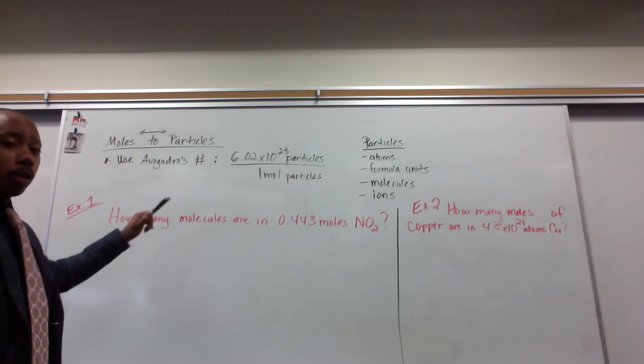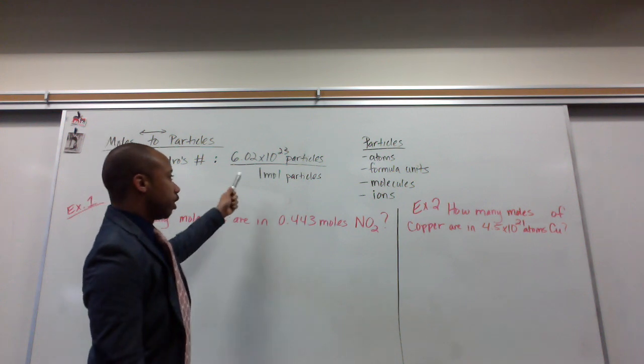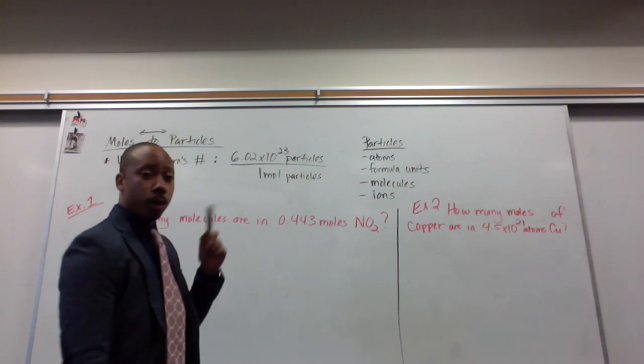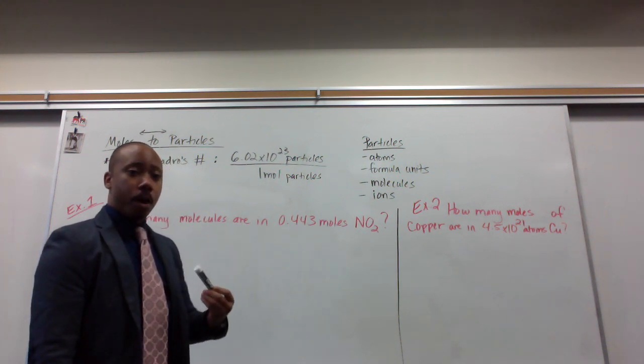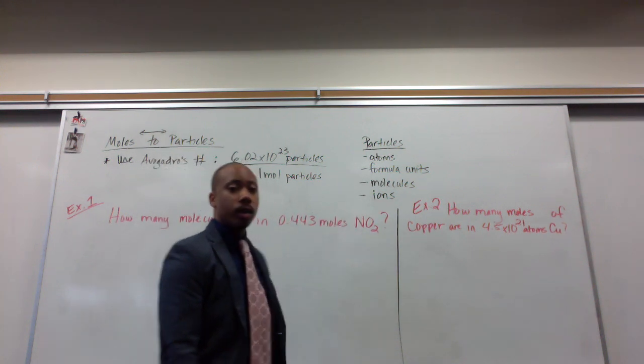When we go from moles to particles or particles to moles, we use Avogadro's number, which states the relationship between particles and moles. It says that there are 6.02 times 10 to the 23rd particles for every one mole of particles. And again, a particle can be classified as an atom, a formula unit, a molecule, or an ion.